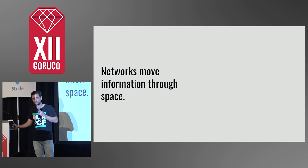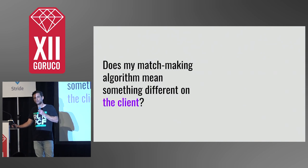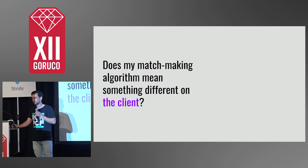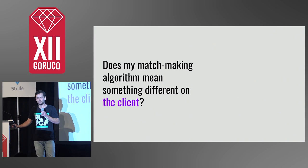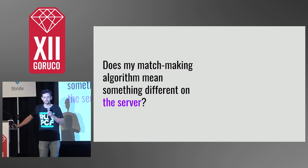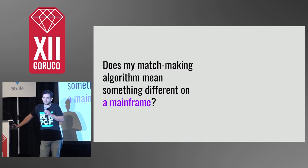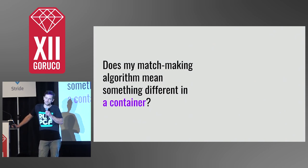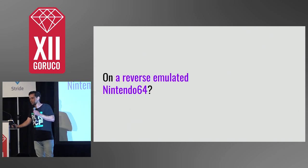Let's consider some scenarios. What if my matchmaking function ran in a browser? Would the output mean something different than if it ran on a server? What about on a mainframe? Or in a container? Or in a function as a service?